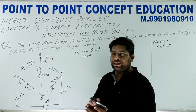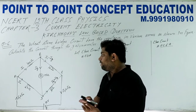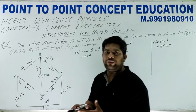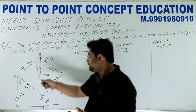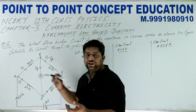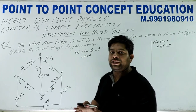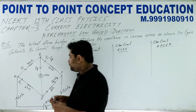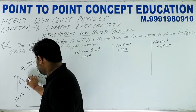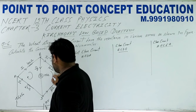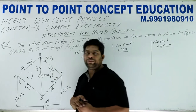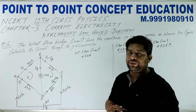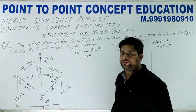अगर battery नहीं है तो direction को किस तरफ से मानेंगे — इसके लिए एक rule आप अपनी तरफ से select कर लीजिए। Suppose anti-clockwise direction में current को negative मान रहे हो, clockwise में positive मान रहे हो। तो clockwise direction में positive और anti-clockwise में negative।